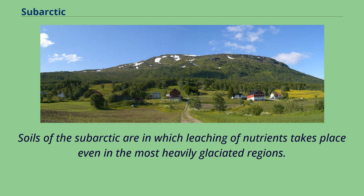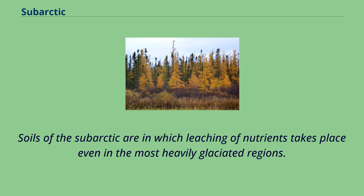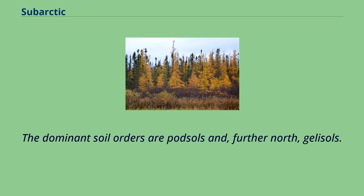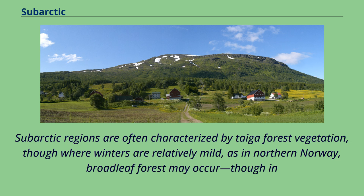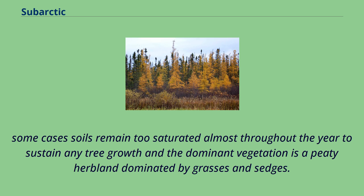Soils of the subarctic are subject to leaching of nutrients, even in the most heavily glaciated regions. The dominant soil orders are podsols and, further north, gelisols. Subarctic regions are often characterized by taiga forest vegetation, though where winters are relatively mild, as in northern Norway, broadleaf forest may occur. In some cases, soils remain too saturated almost throughout the year to sustain any tree growth, and the dominant vegetation is a peaty herbland dominated by grasses and sedges.